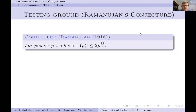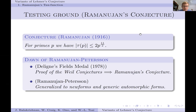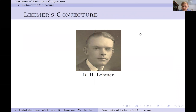Another interesting testing ground is Ramanujan's conjecture. In his 1916 paper, Ramanujan conjectured that the tau function at prime P is bounded above by 2 times P^(11/2) in absolute value. Deligne, when he proved the Weil conjectures, showed his proof implied Ramanujan's conjecture. This has been generalized to general newforms and automorphic forms. The tau function has long been a testing ground for many different areas of mathematics, so whenever we have a question about it, it's worth studying and generalizing.